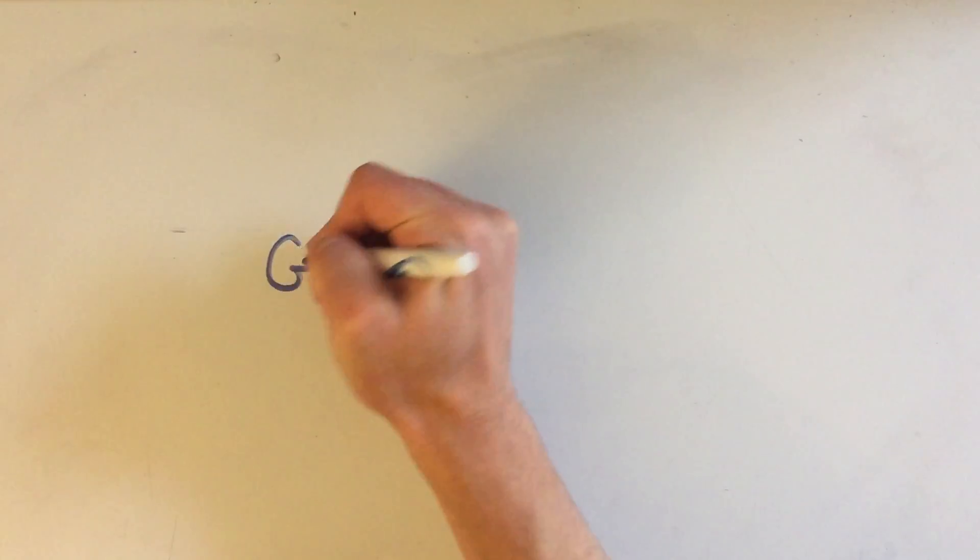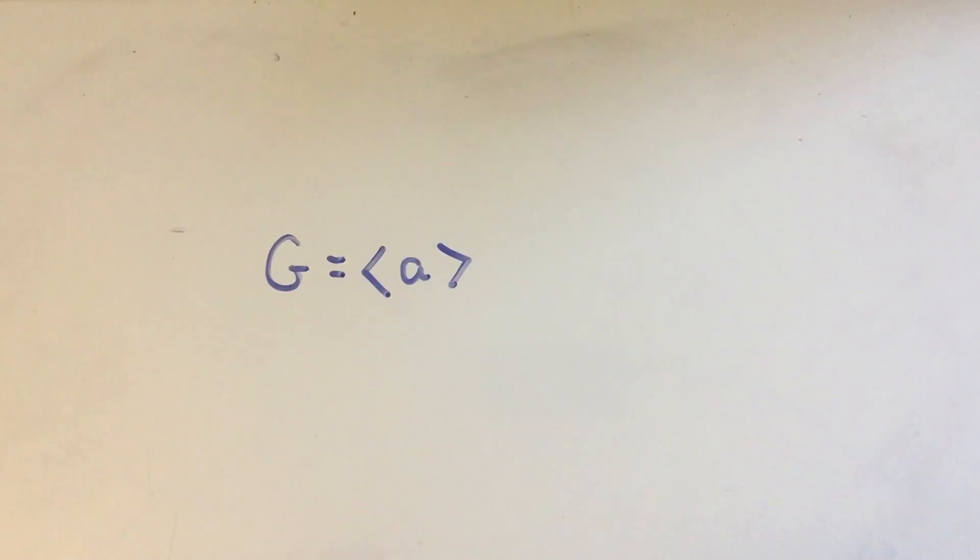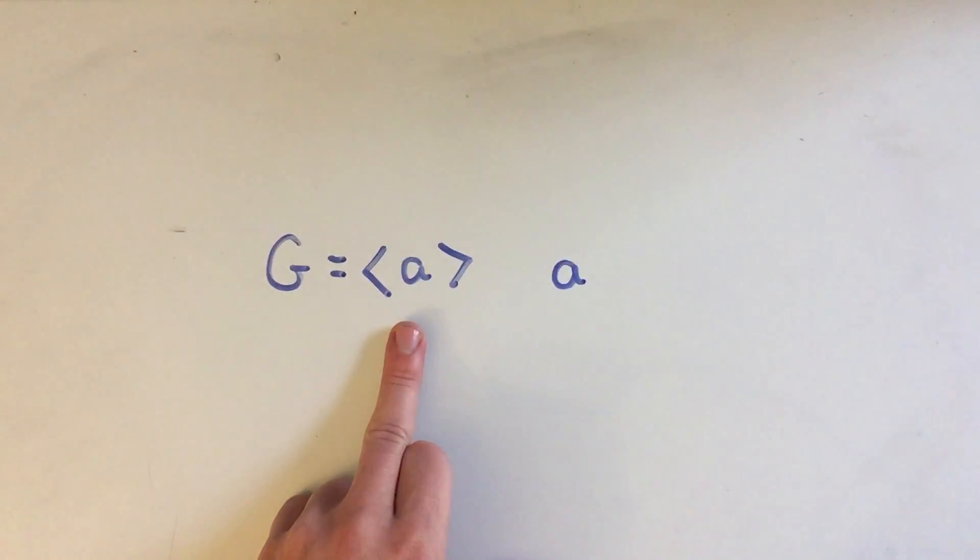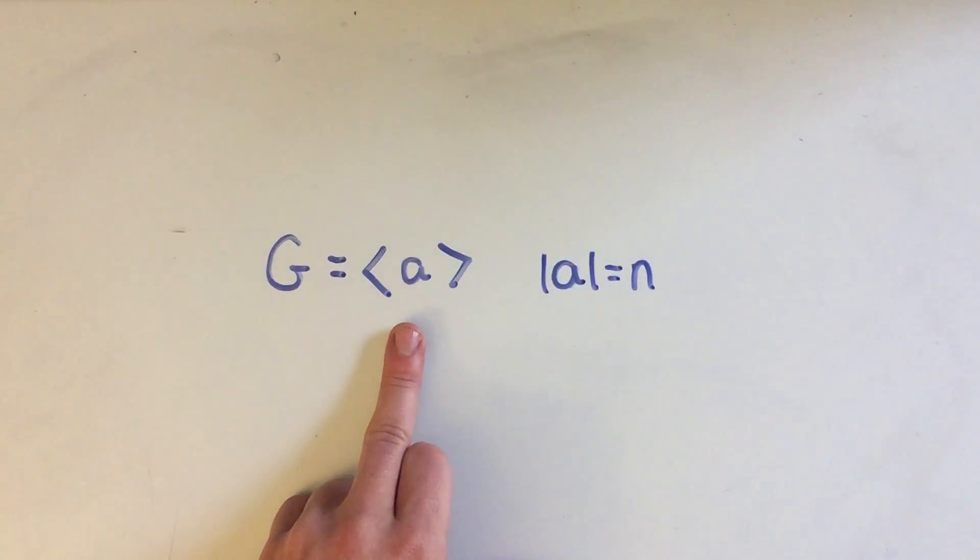So let's just take some finite group G, and it's a cyclic group, so it's generated by A. Well, since this is finite and A generates it, A has some finite order. We'll call it N.